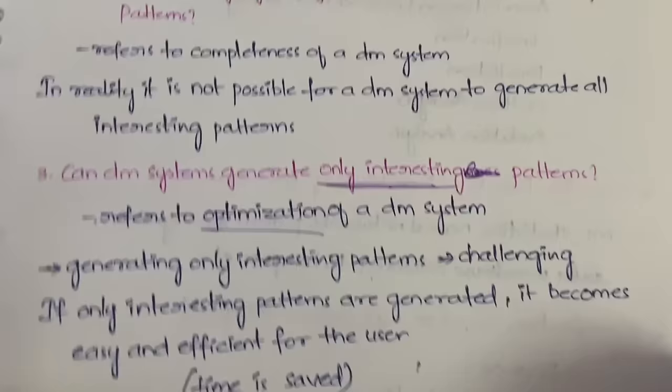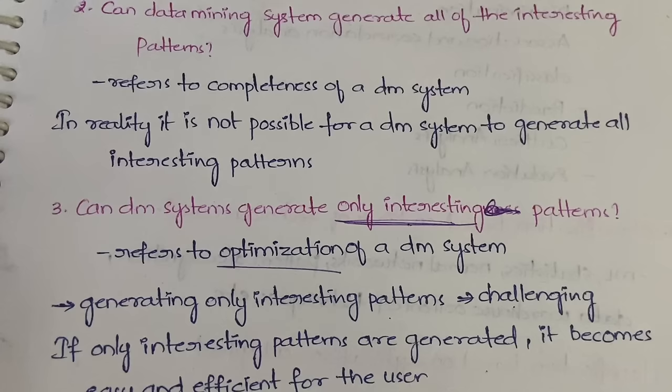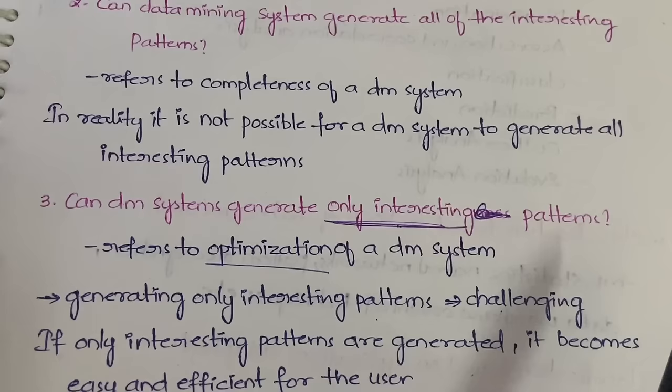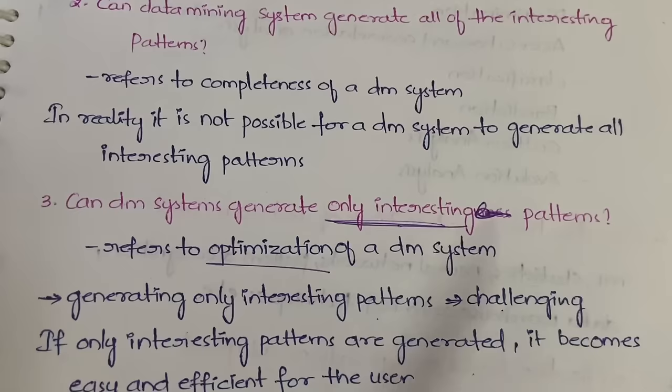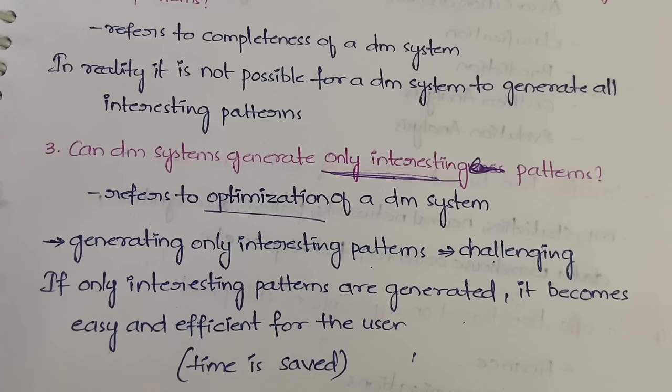So, what makes a pattern interesting — done. Can a data mining system generate all of the interesting patterns — actually no. Can a data mining system generate only interesting patterns — also no. The shopping mall example helps you remember these concepts easily. This is a theory-based topic but important according to the syllabus. That's all for this video — let me know any doubts in the comments and I'll try to clear them. Thanks for watching till the end.